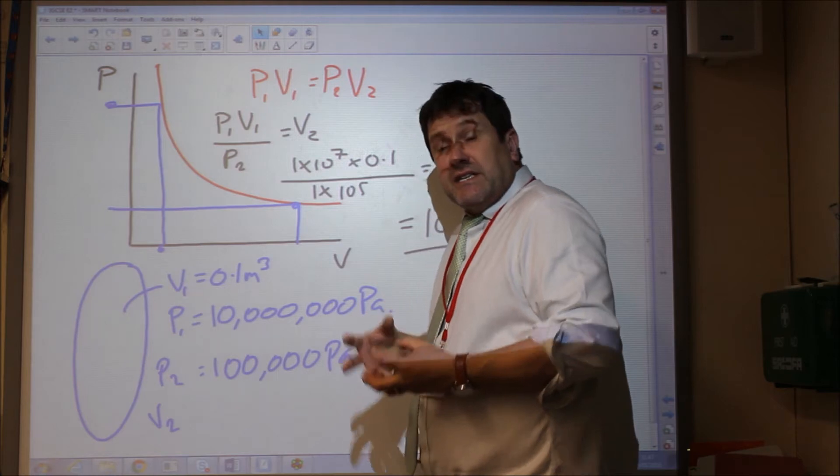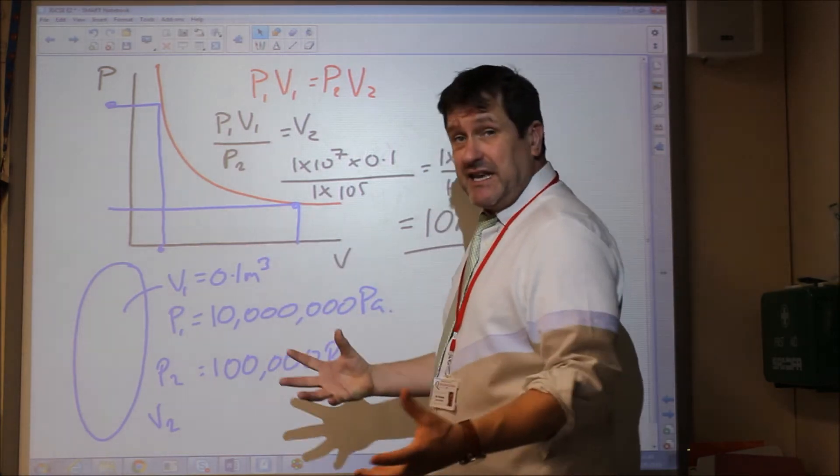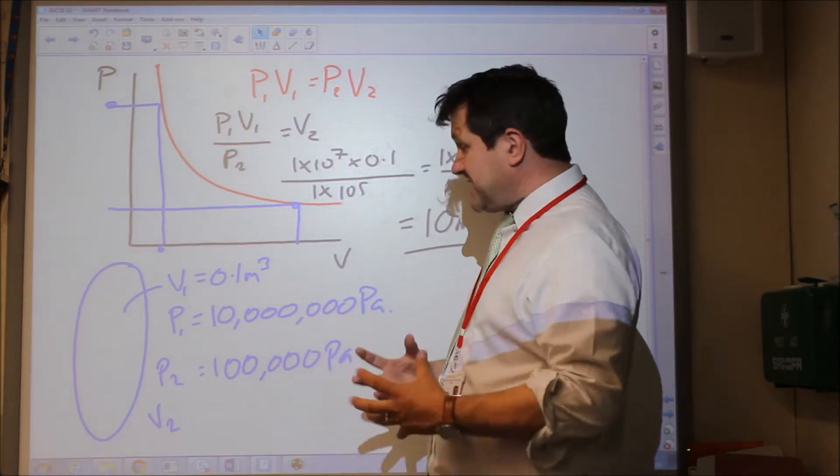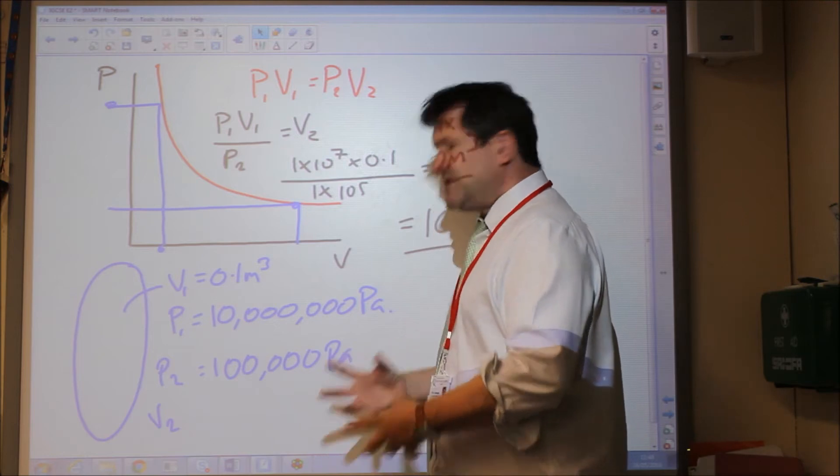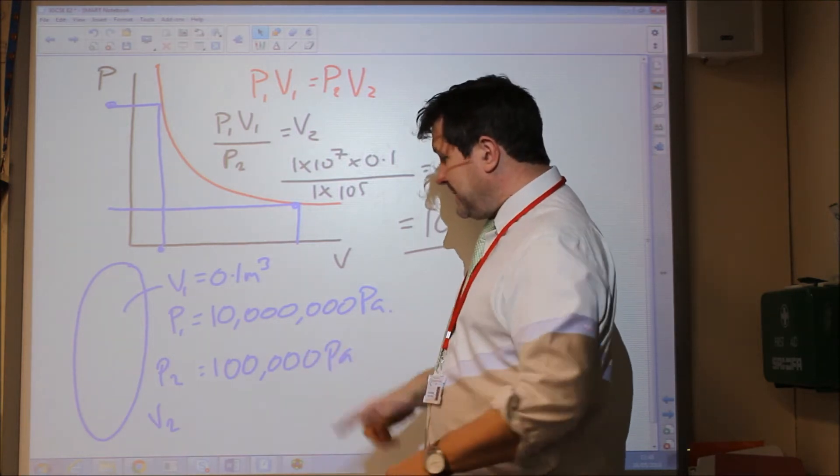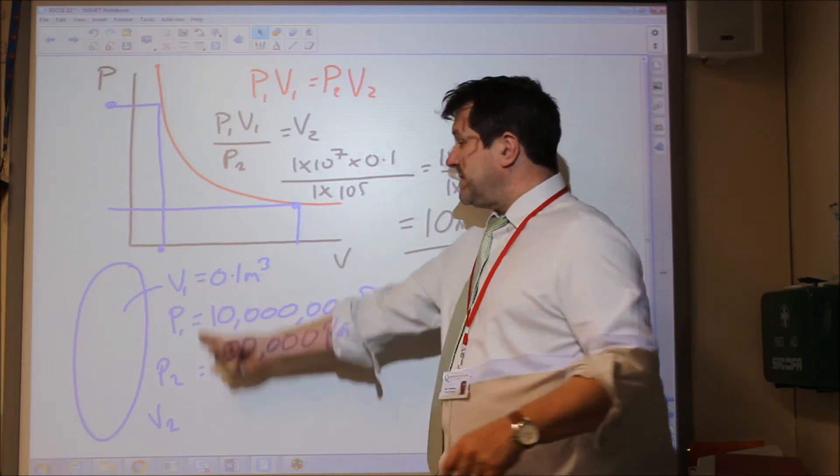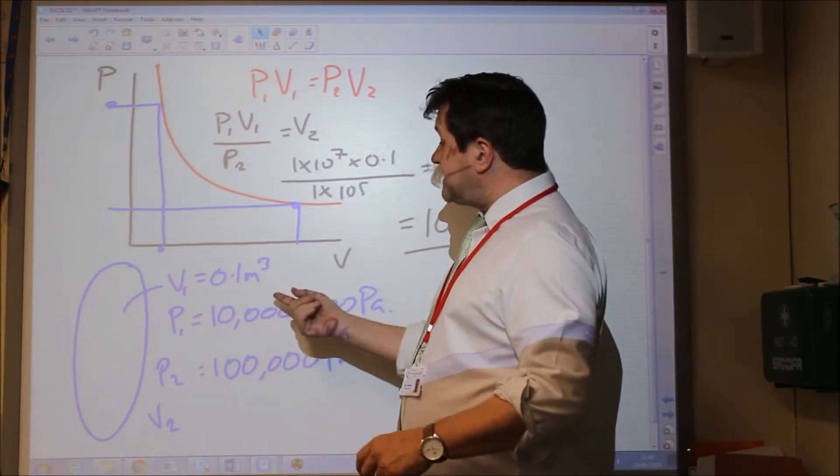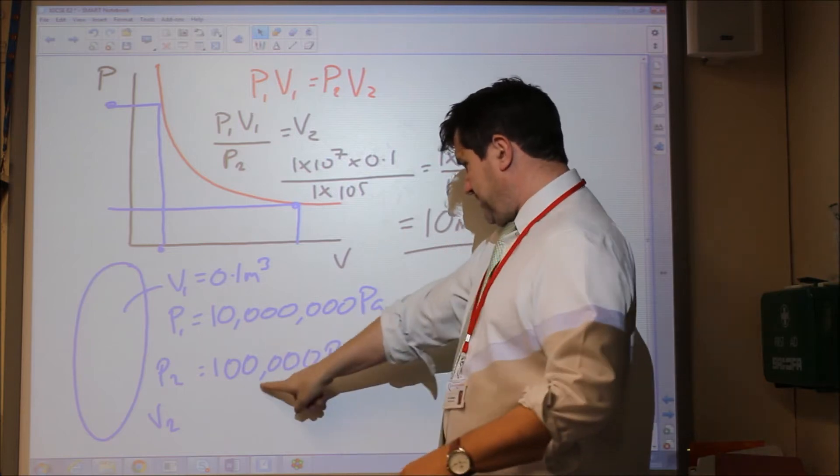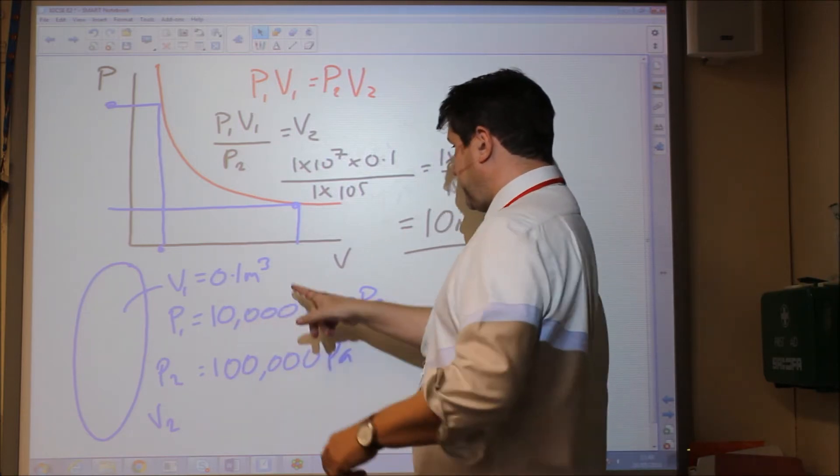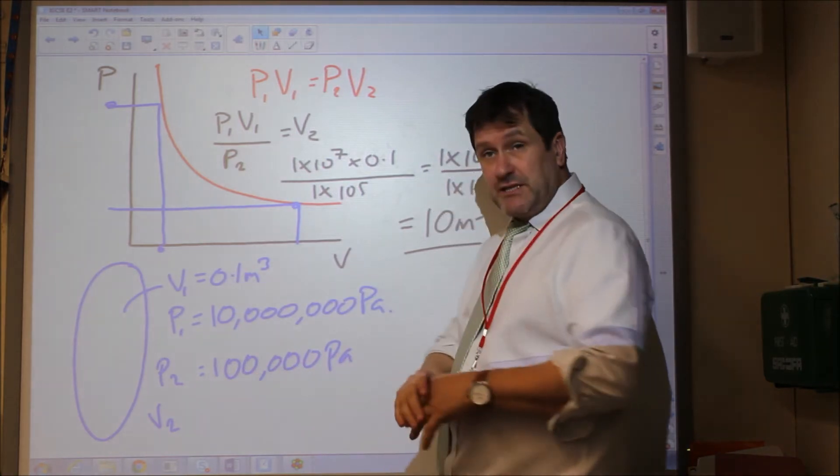So when this gas was allowed to expand, it would expand to occupy a volume of 10 metres cubed, which does make sense given that the pressure here is 100 times smaller, so 100 times that is 10 metres cubed.